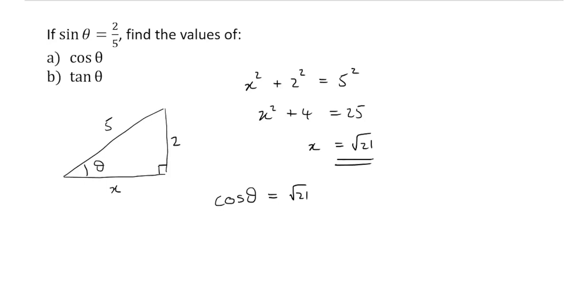finding cos theta is going to be quite simple because cos theta is adjacent over hypotenuse. So it'll be root 21 upon five. And tan theta is the opposite over the adjacent. So that's two upon root 21. Or if we wanted to rationalize, 2 root 21 upon 21.